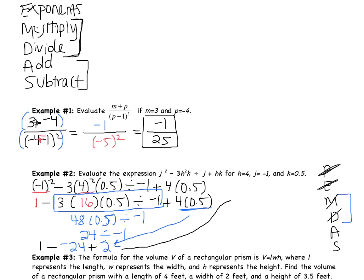Recopying the expression: 1 minus negative 24, plus 2. Now the last step — adding and subtracting, left to right. 1 minus negative 24: subtracting a negative becomes addition, so 1 plus 24 is 25. Then 25 plus 2 is 27. The final answer for Example 2 is 27.